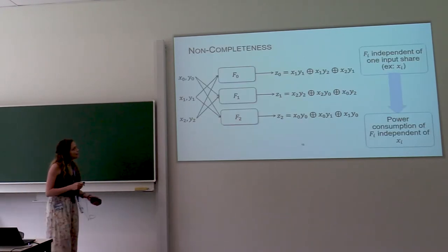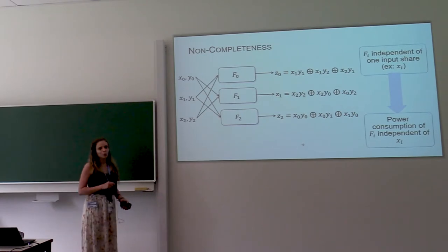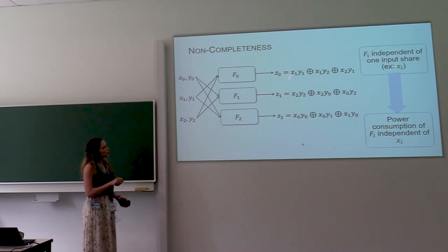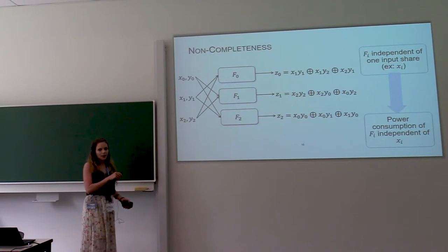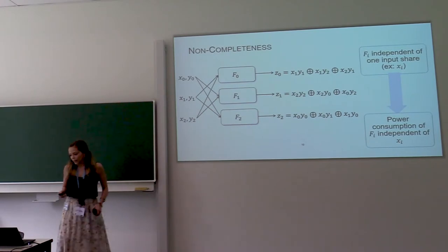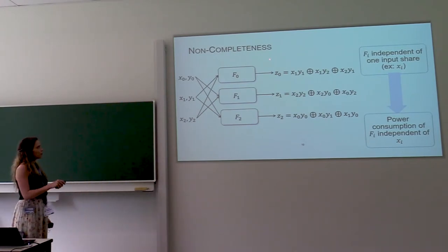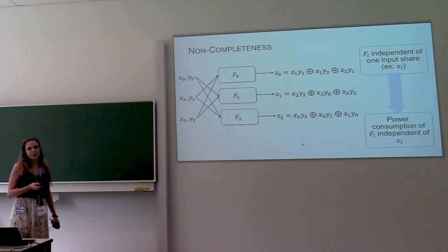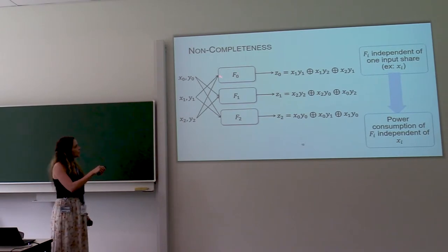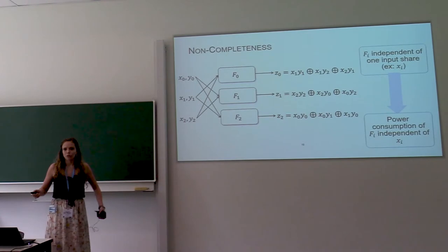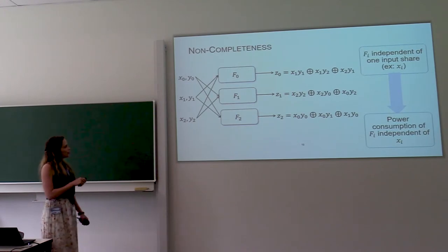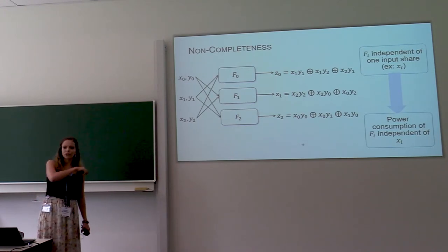An important principle is that of non-completeness. So it says that each of your output shares should be independent of at least one input share. So now I've distributed those cross products over the output shares in a way that z0 is independent of x0 and y0, etc. So this way, you assure that the power consumption of this block is independent of at least one input share. And in that case, it doesn't matter whether there are glitches happening in this block or not. It only depends on two shares, so it cannot reveal any information from the other share. This is also, by the way, why we are now working with three shares instead of two shares from the first example.